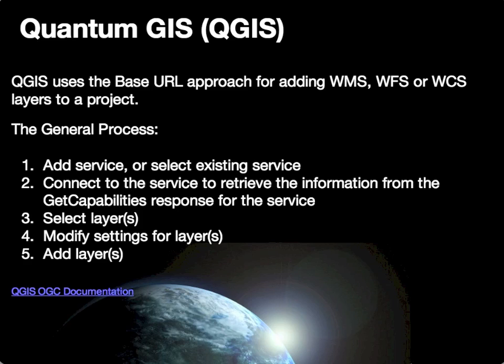Now let's look at Quantum GIS, or QGIS, as a specific desktop GIS that exemplifies the general process for linking to Open Geospatial Consortium services. Quantum GIS now supports all three major OGC services discussed in this class: web map services, web feature services, and web coverage services. In all instances, QGIS primarily uses the base URL approach for the configuration process, pointing the GIS at the remote service so that it may retrieve the GET capabilities response and configure itself to allow you to add layers from those services.